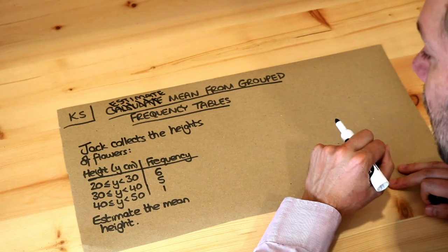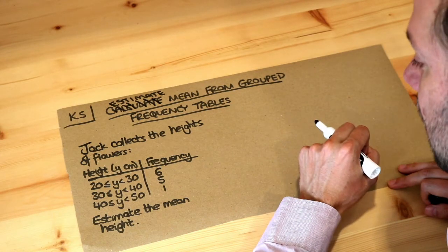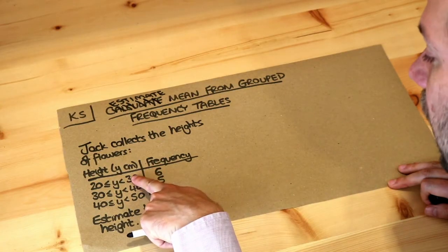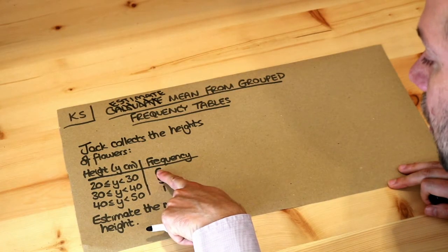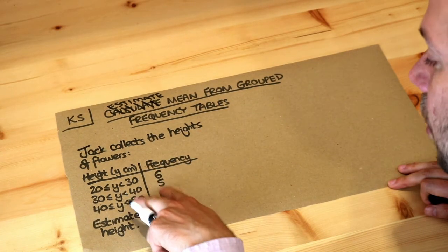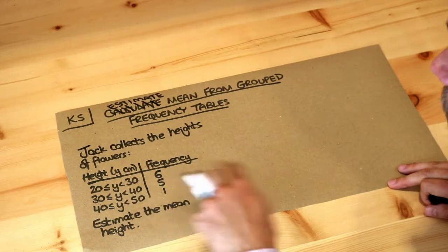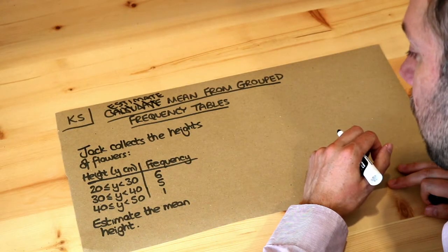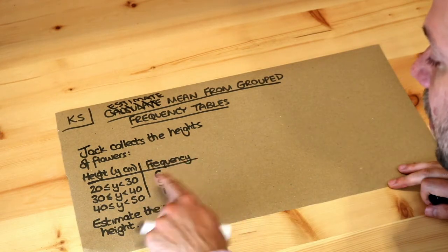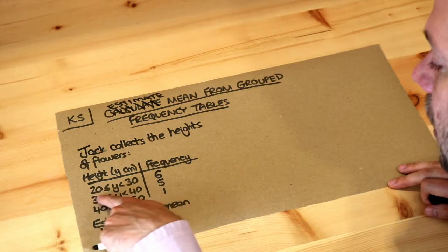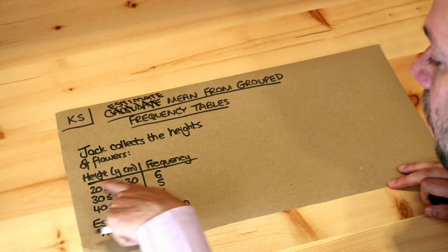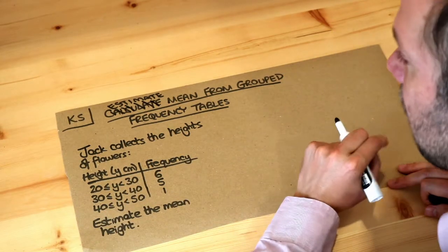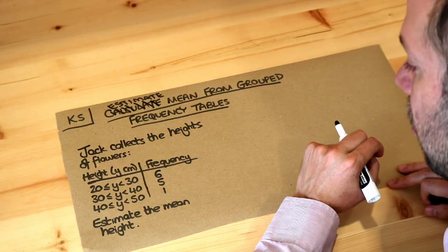In a previous video we saw that for an ungrouped frequency table we could take each height, times it by the frequency, add all those pairs together, and divide by the total frequency. The problem here is that we don't have individual heights — we've got height ranges. But there's only one extra thing we need to do.